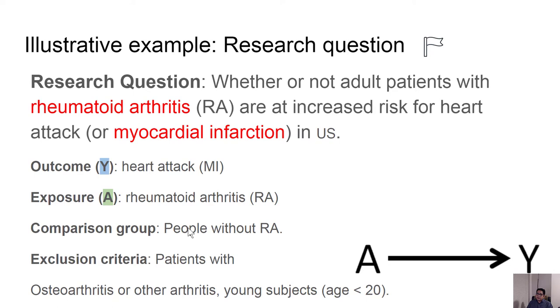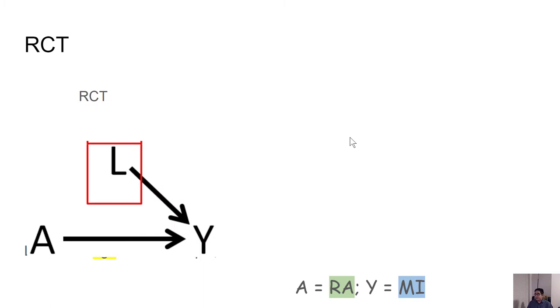We are also excluding patients who have other kinds of arthritis or who are young people generally. So our research question is whether or not adult patients with rheumatoid arthritis are at increased risk of heart attack in the United States.